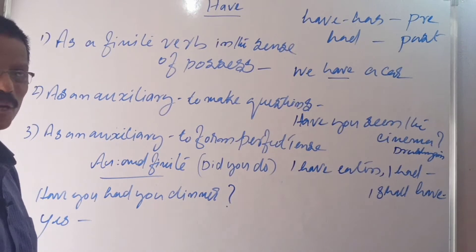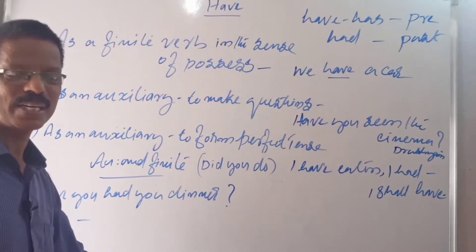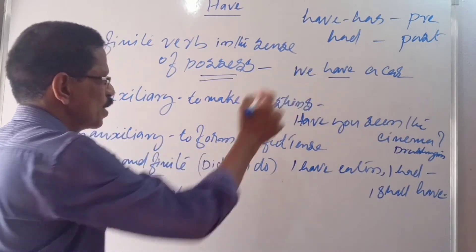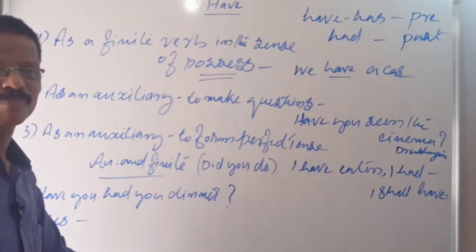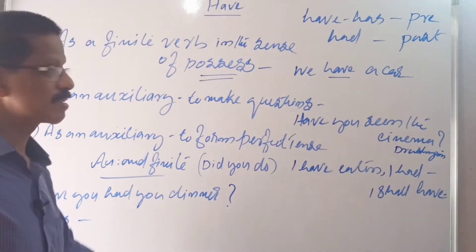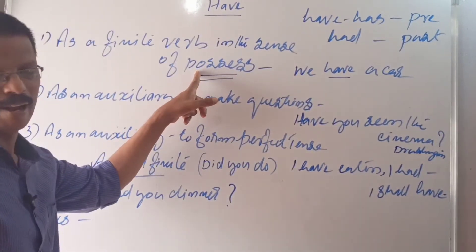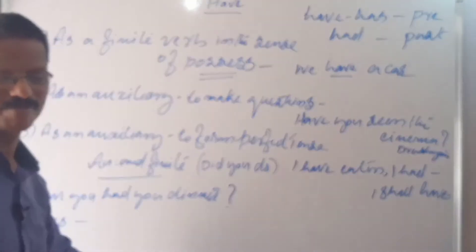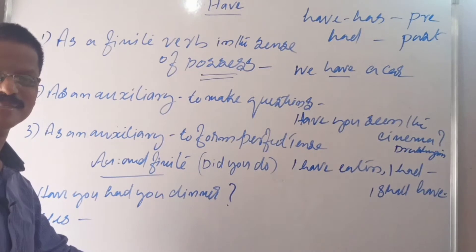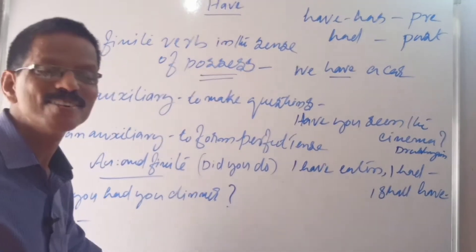As a finite verb, as a regular verb, there is no other verb. Verb means the activity of the subject. In the sense of what? Possess. Possession. We have a house. Here we have a house of our own, not rented house.